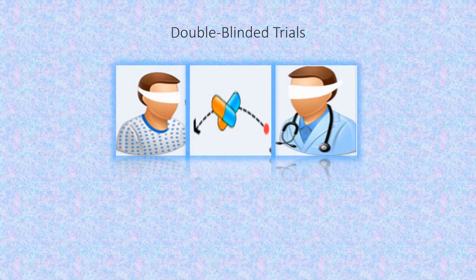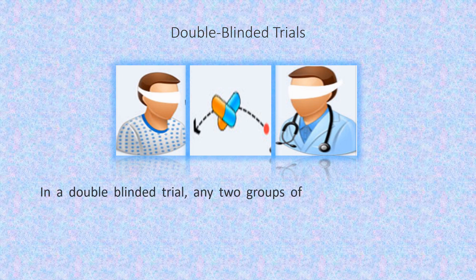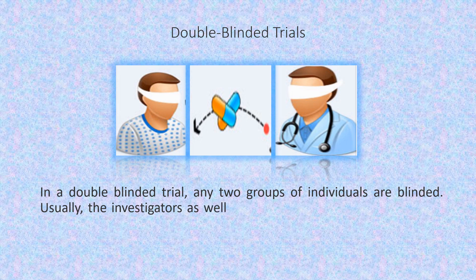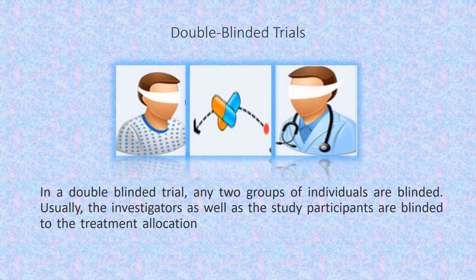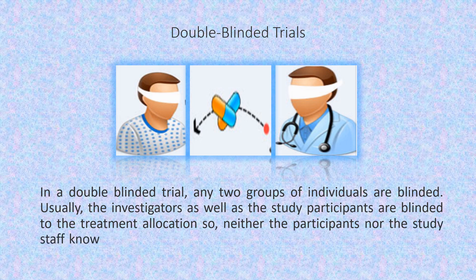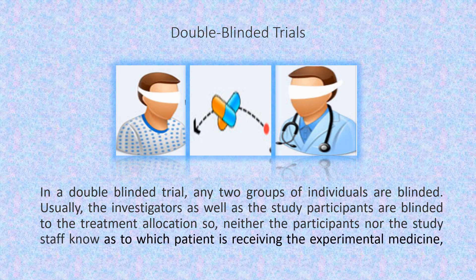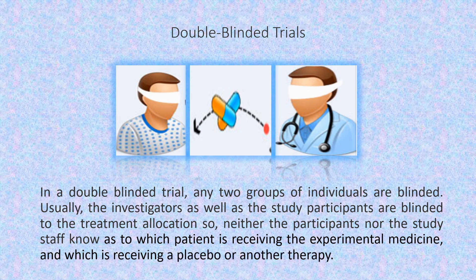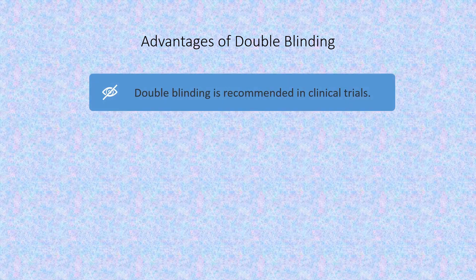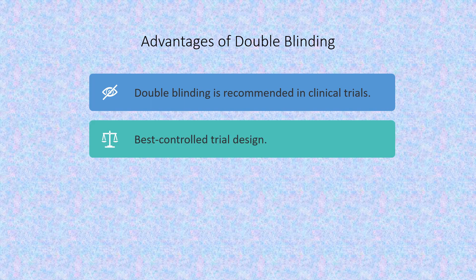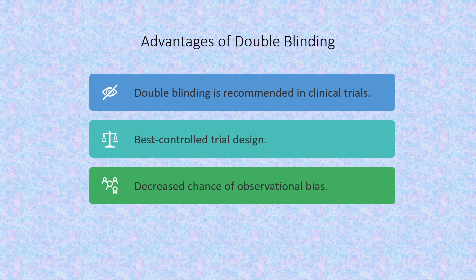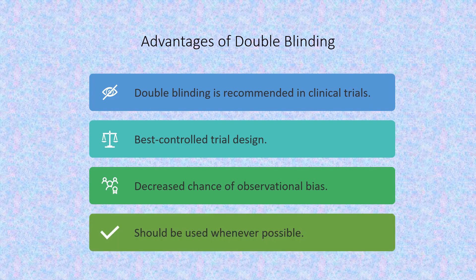In a double-blinded trial, any two groups of individuals are blinded — usually the investigators as well as the study participants — to the treatment allocation, so neither the participants nor the study staff know which patient is receiving the experimental medicine and which is receiving a placebo or another therapy. Double-blinding is recommended in clinical trials, known to be the best controlled trial design, and should be used whenever possible as it decreases the chance of observational bias.